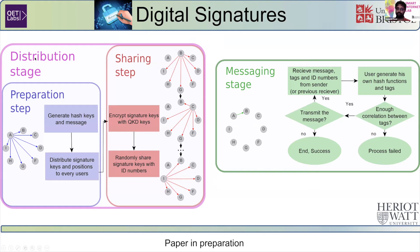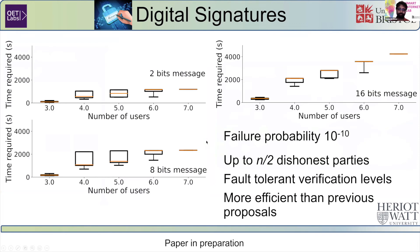Basically, during the preparation step, we distribute quantum keys, generate hash keys from the quantum keys, and distribute these signature keys to every user, such that once a message is sent, they can compute the hash and the signature keys to make sure everything is secure and safe, and either accept or reject the protocol. The nice thing about this digital signature protocol is we can support a very high failure probability and up to half the parties in the network being dishonest. We can also have several different fault-tolerant verification levels and be more efficient in quantum resource usage than other protocols.